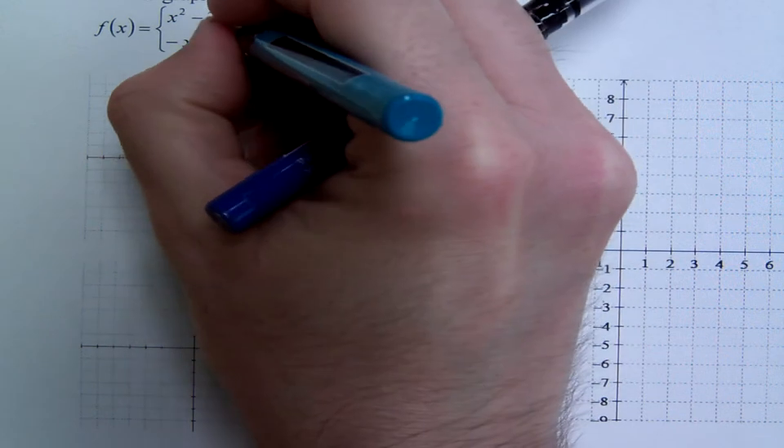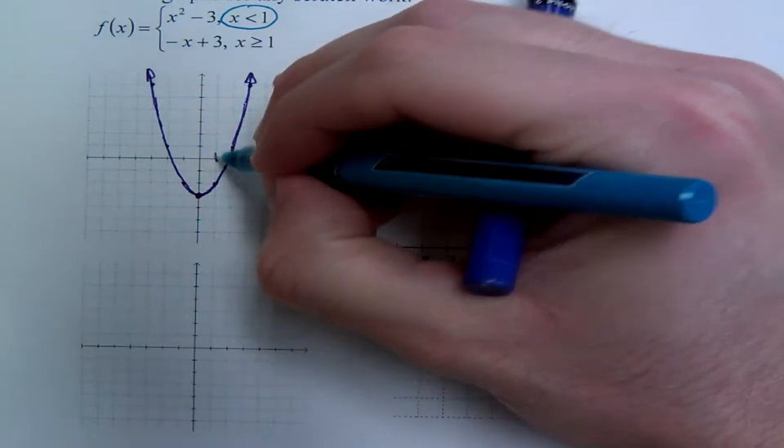However, this function is not all of x squared minus 3. It's only those points where the x coordinates are less than 1. So here's when x equals 1 right here. So what we do is basically we just create a little cut line right here. It's as though you're taking a pair of scissors and you're going to cut this guy.